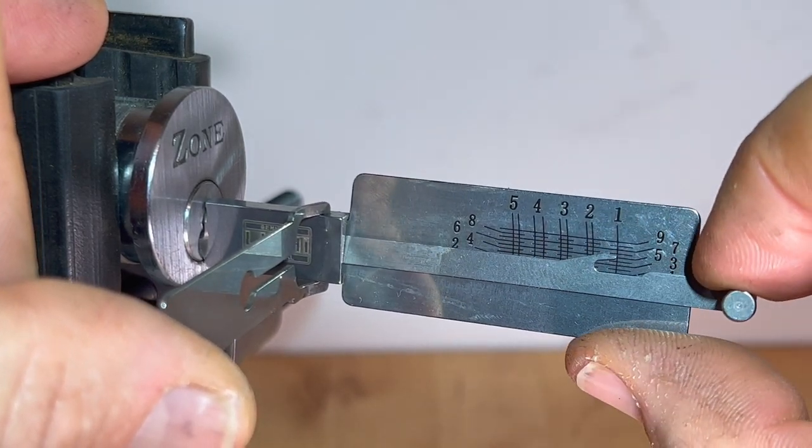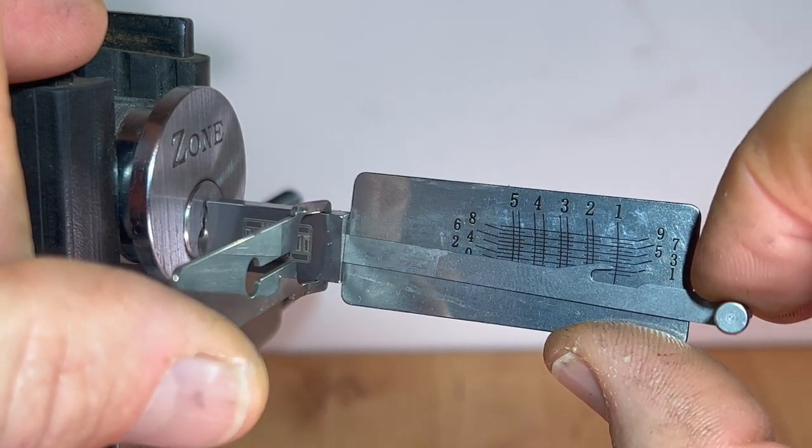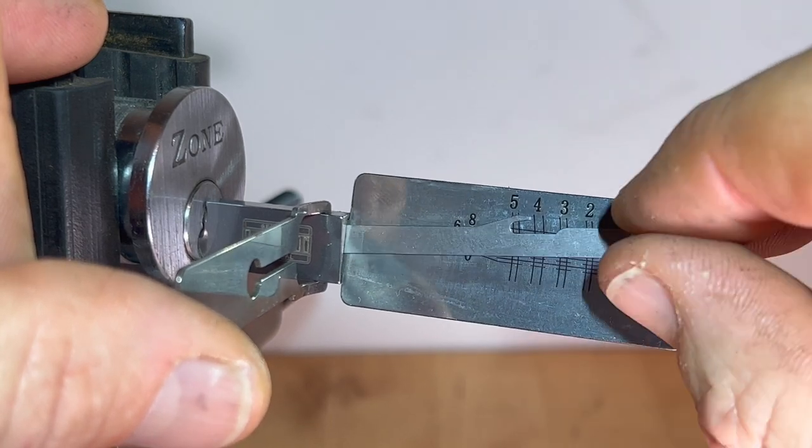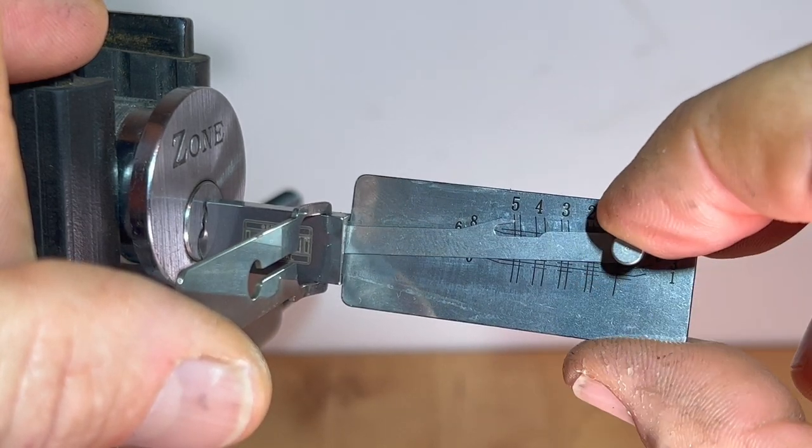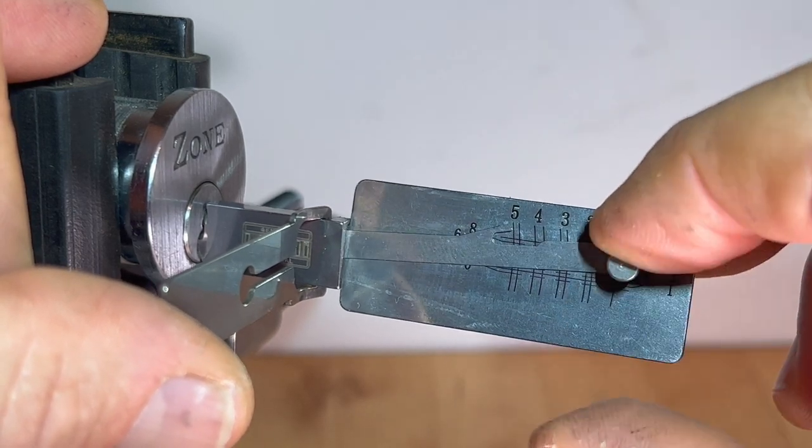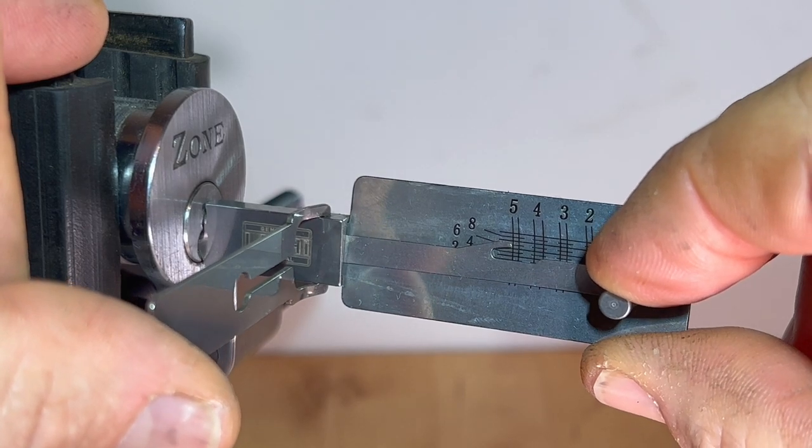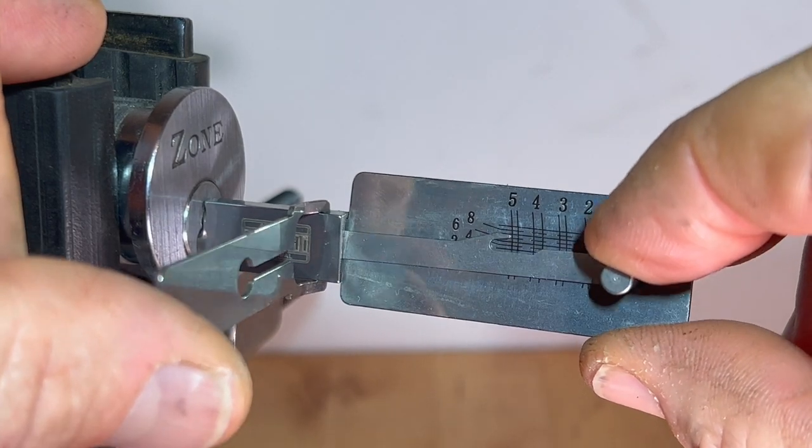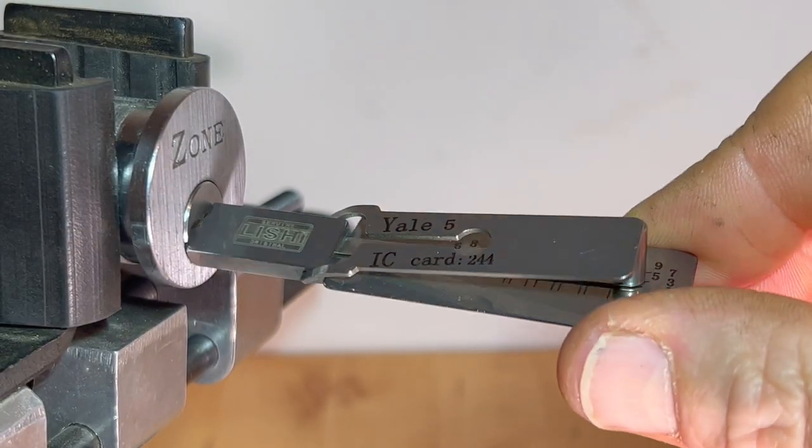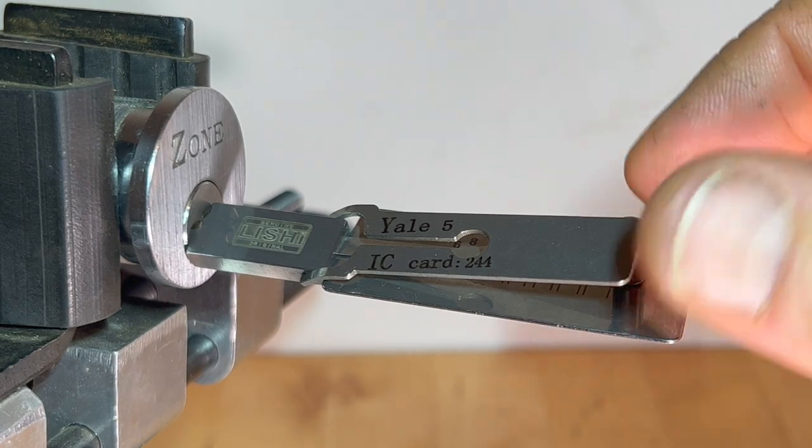Let's go back through the lock. Pin one is set, pin two is set, pin three is set, four is set, and this time we'll see if we can get five without oversetting it. Just a little bit more tension.